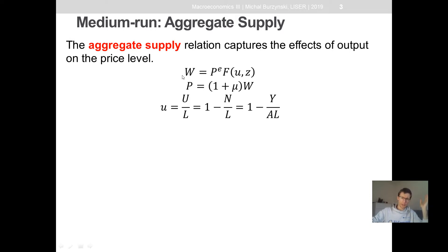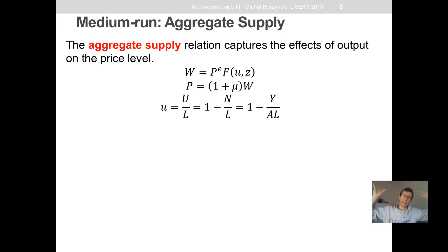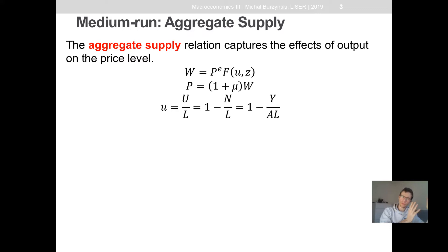In this market, we have three equations. Equation number one: the nominal wage is a function of expected prices and of the unemployment rate U, and Z — some other determinants outside the model that we know exist, for example the strength of unions or the laws in the country determining how relations between employers and employees look. So the nominal wage is increasing with the expected price level and decreasing with the unemployment rate due to workers' bargaining power on the labor market.